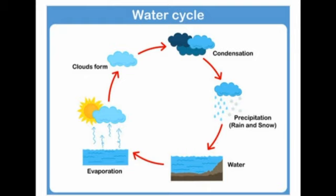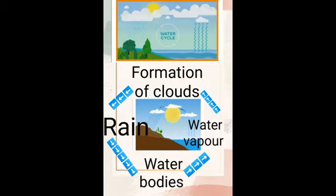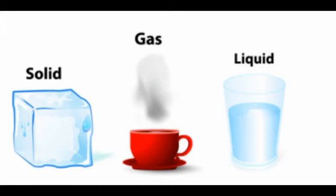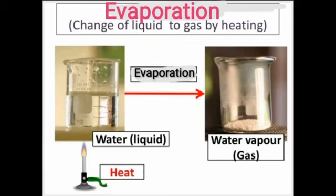Last class we discussed about water cycle and water from glaciers. Now I will ask some questions from that topic. Question number 1: What are the three states of matter? Very good. Solid, liquid and gas. Question number 2: What is evaporation? Change of liquid to gas by heating. Water changes into water vapour.